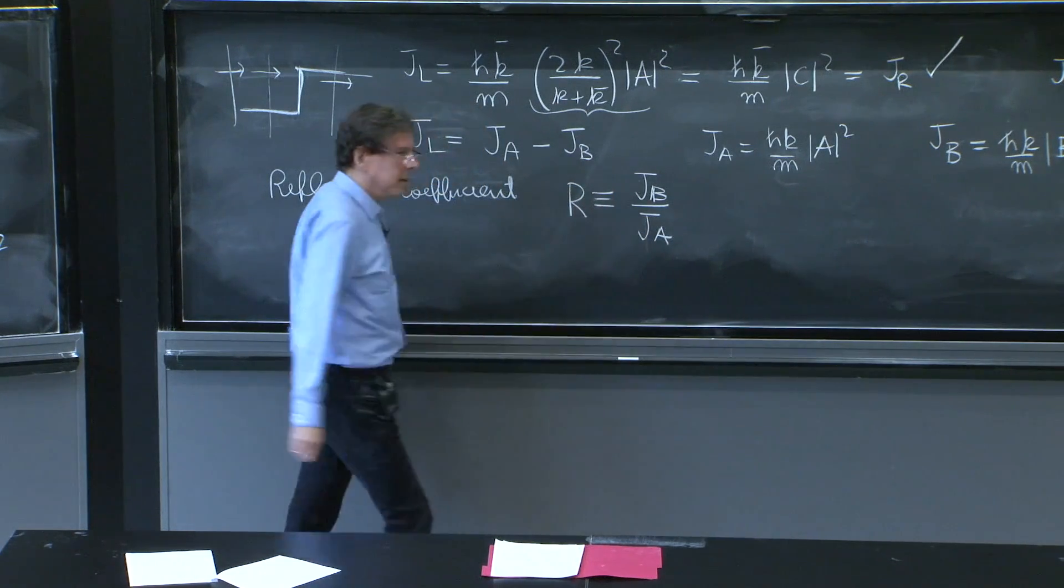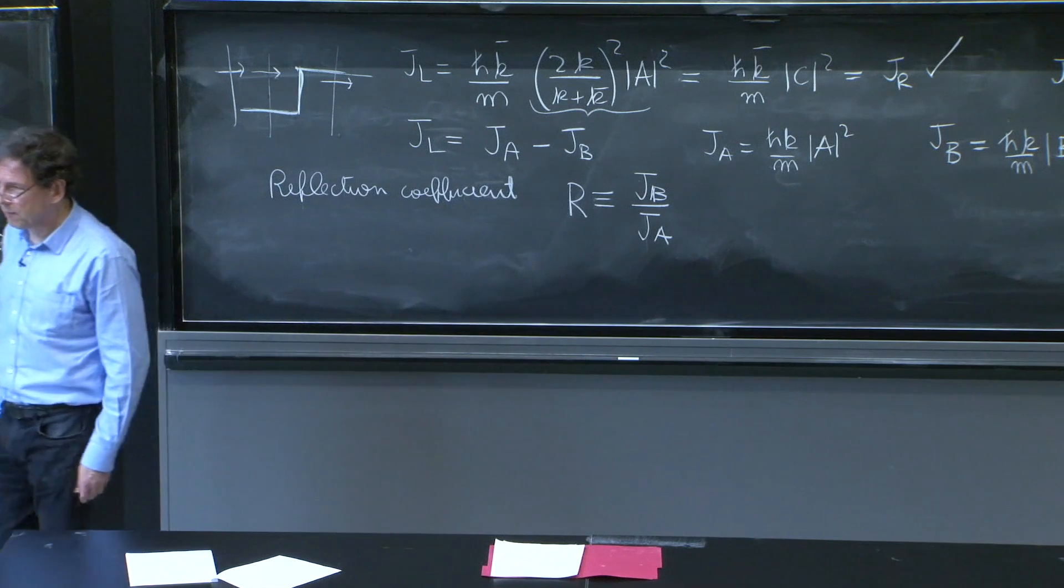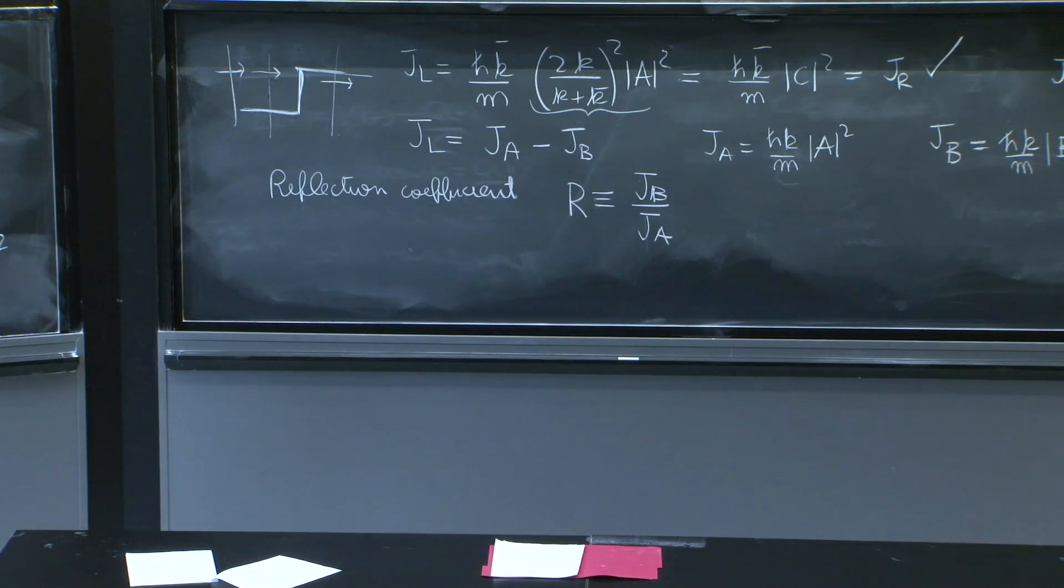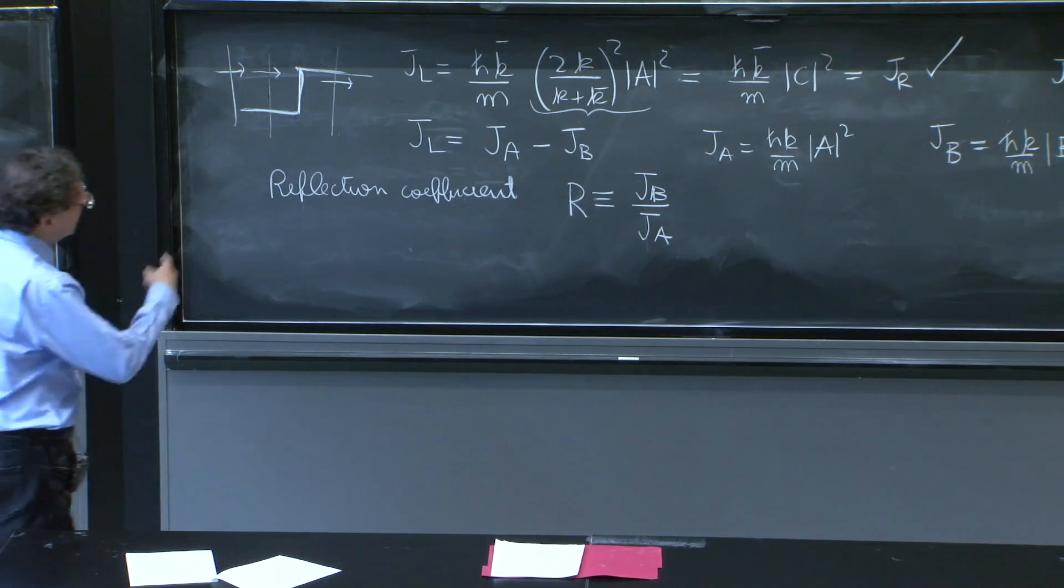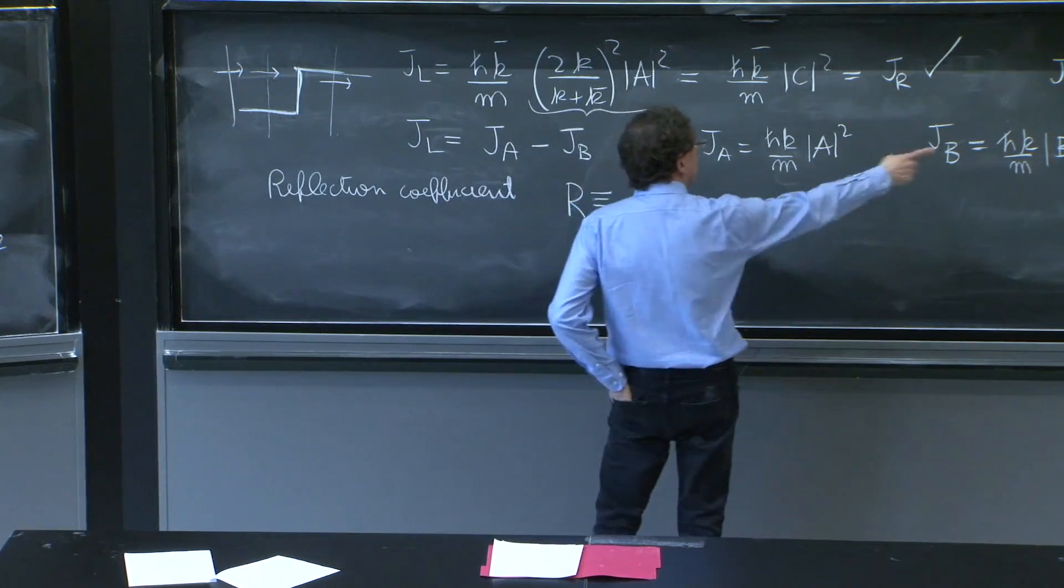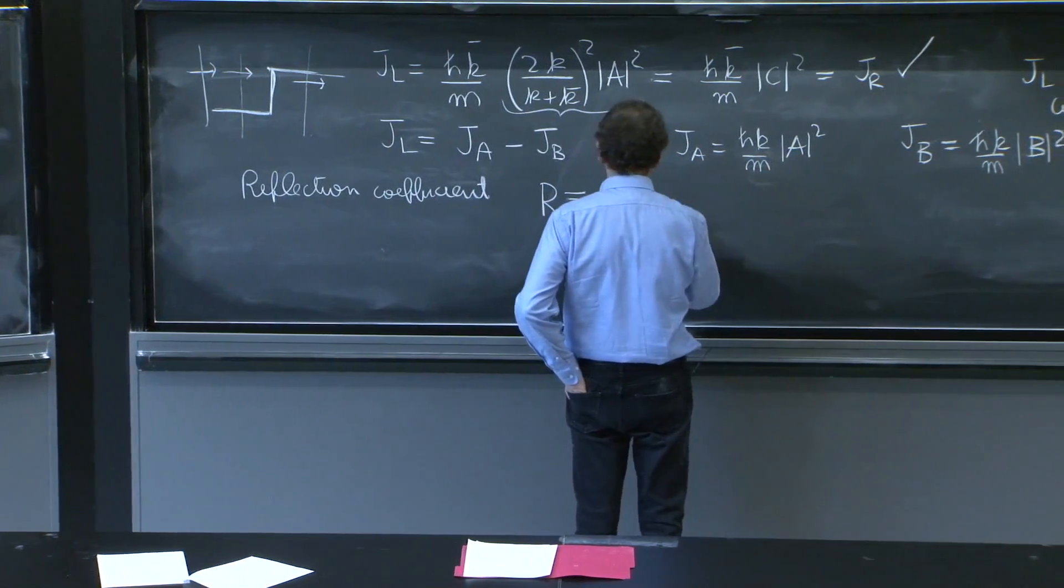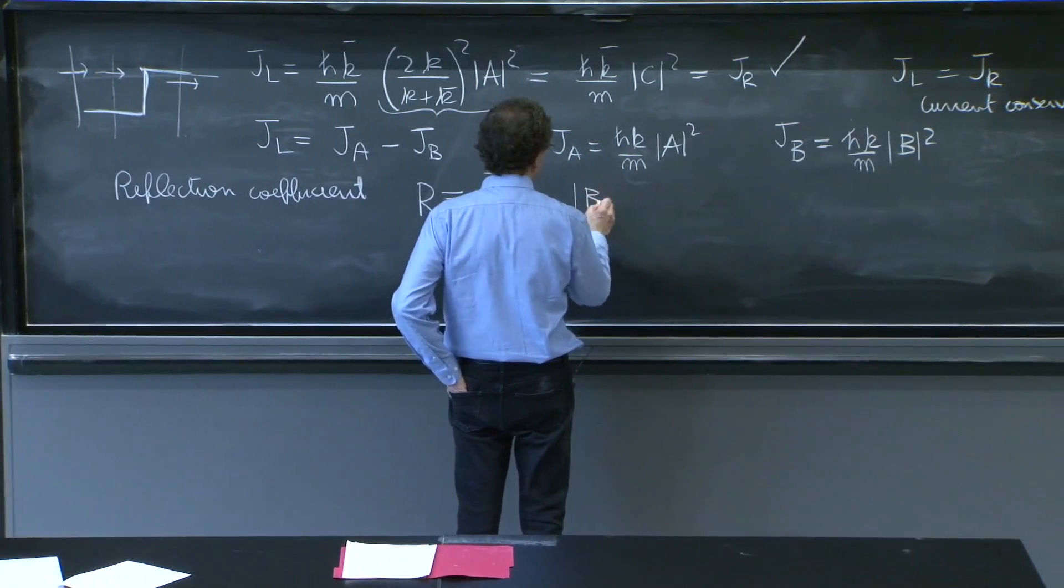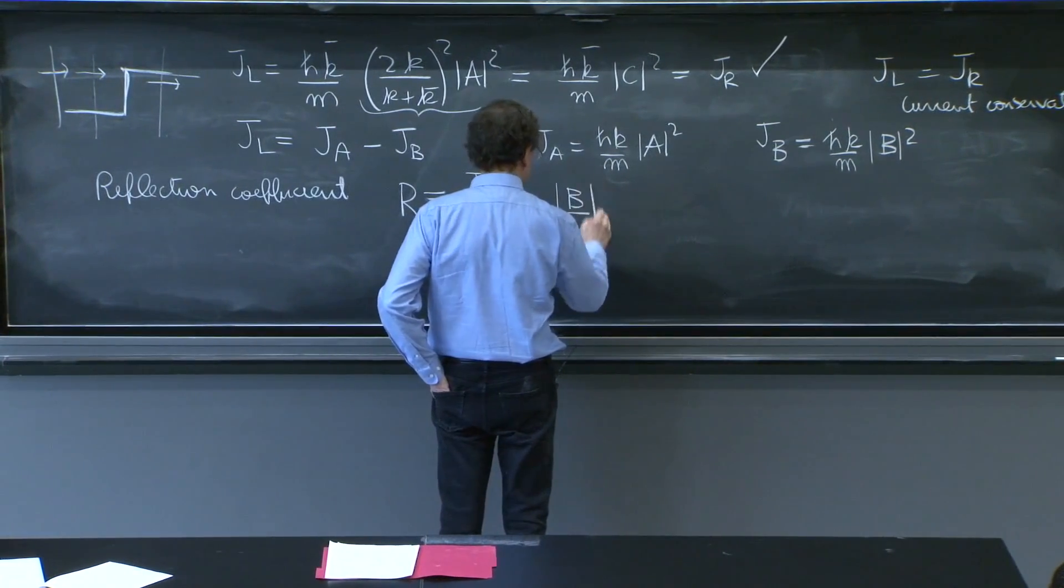It's a definition, but it's a reasonable definition. And then, if it is this ratio, because of these expressions, it happens to be b over a squared.